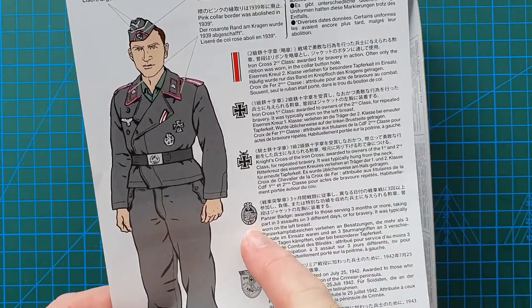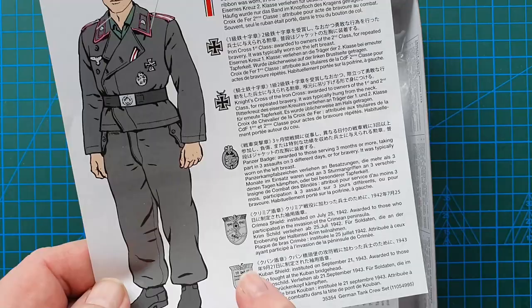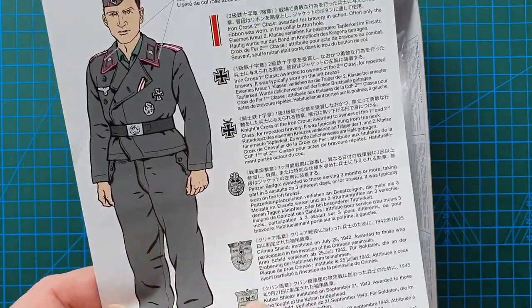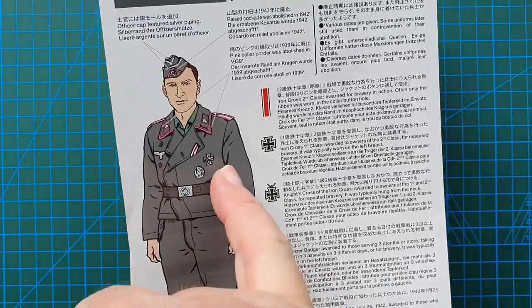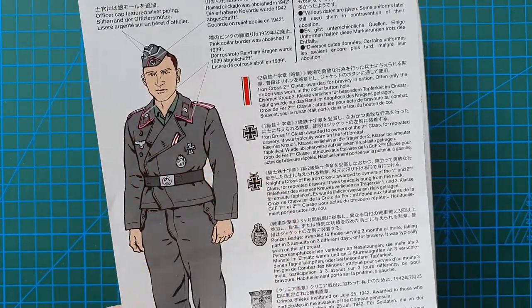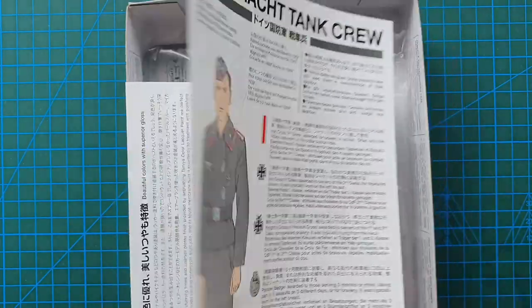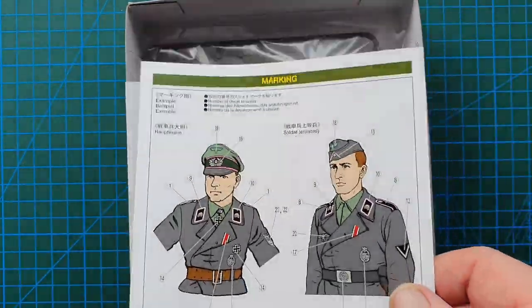And it also details your badges and medals: Crimea Shield, even the Kuban Shield. These would go on the left sleeve usually. So that's not bad, I love that, that's beautiful.